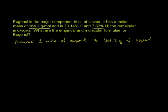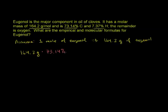They gave us the composition — the percentage that is carbon, hydrogen, and the remainder is oxygen. If we assume we have a mole of eugenol with a mass of 164.2 grams, we can use the percentages to figure out the mass of carbon, hydrogen, and oxygen. So: 164.2 grams times 73.14% will tell us the mass of carbon.